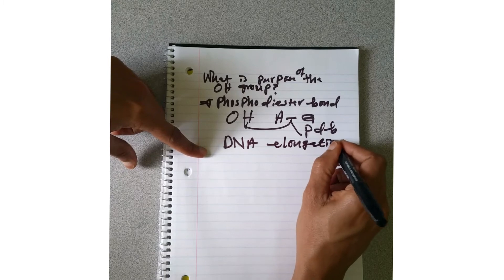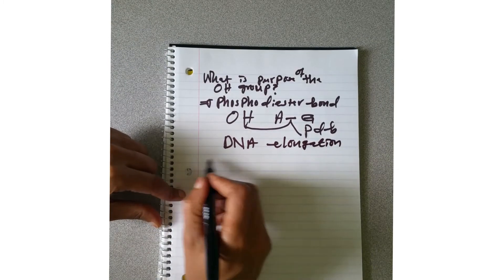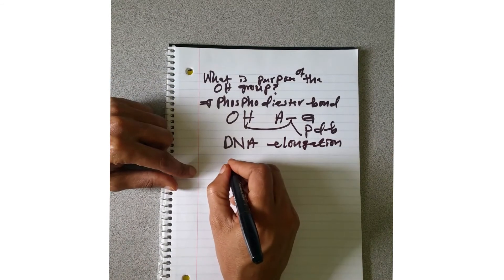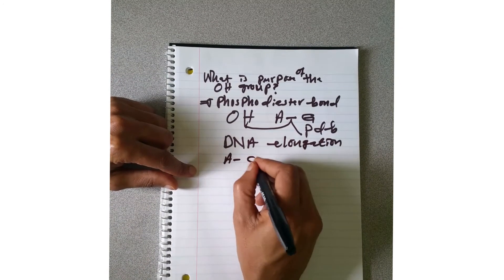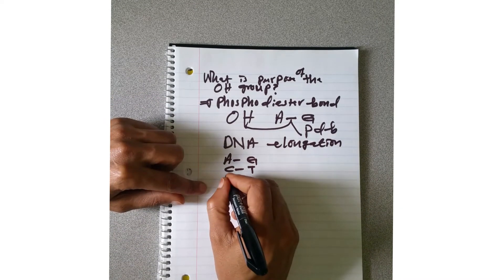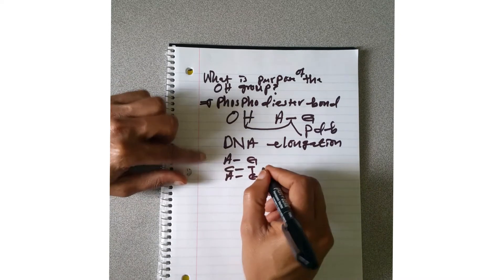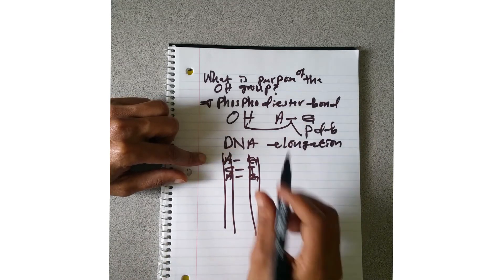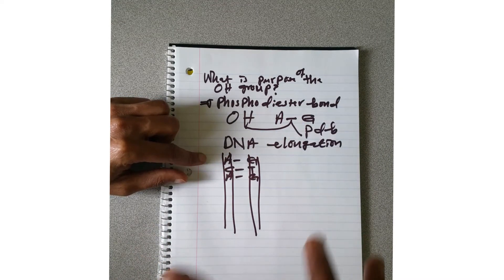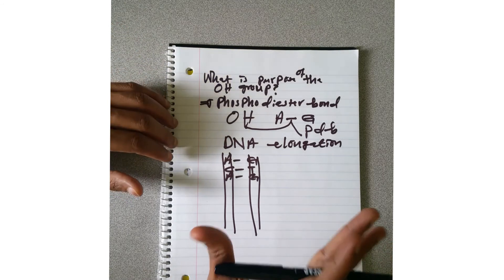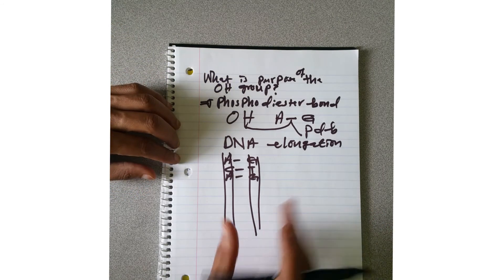The phosphodiester bond makes DNA elongation possible. Because DNA elongates, it becomes long as each base pair is added. This OH group is what makes DNA elongation happen. Without it, we cannot have DNA formation or DNA elongation — that is the purpose of the OH group.